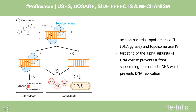Mechanism of Action: The bactericidal action of Pafloxacin results from interference with the activity of the bacterial enzymes DNA gyrase and topoisomerase 4, which are needed for the transcription and replication of bacterial DNA. DNA gyrase appears to be the primary quinolone target for gram-negative bacteria, while topoisomerase 4 appears to be the preferential target in gram-positive organisms. Interference with these two topoisomerases results in strand breakage of the bacterial chromosome, supercoiling, and resealing. As a result, DNA replication and transcription is inhibited.